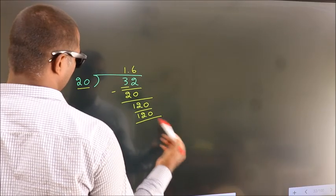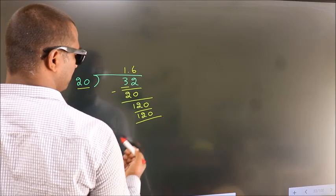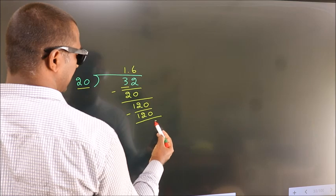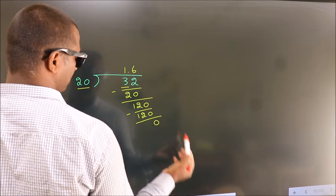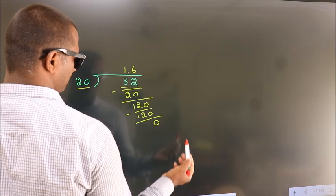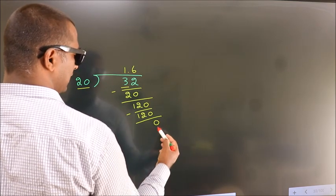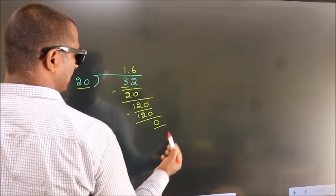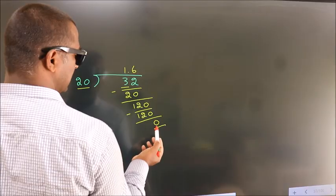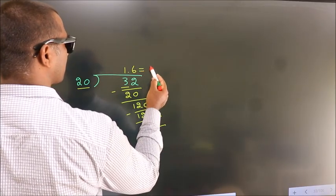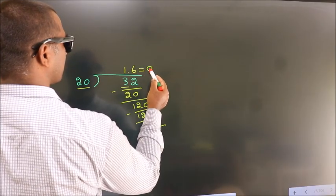Now we subtract and we get 0. Here we got remainder 0. So this is our quotient.